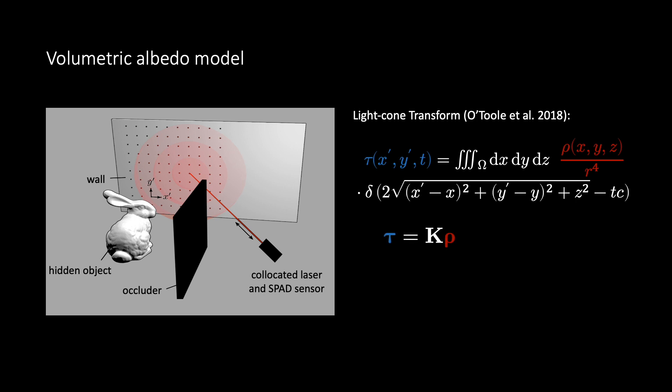Although this is a linear model, computing the hidden scene albedo rho from tau by directly inverting the system is challenging due to the size and the unstructuredness of the system matrix k. The idea behind the light cone transform is to warp the measurements tau and the hidden scene albedo rho. This expresses the forward model as a convolution, allowing us to recover the hidden scene albedo from the measurements using deconvolution.